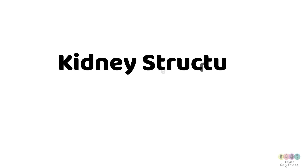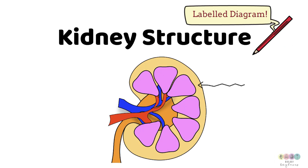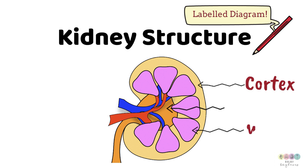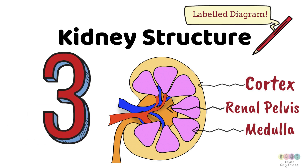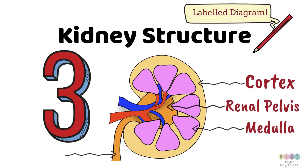Diagrams are very important in Leaving Cert biology, particularly in this chapter, so you must be able to draw and label a good diagram of the kidney. There are three labels to place on your diagram: the cortex, the medulla or medullary pyramids, and the renal pelvis — often forgotten. Three is the magic number and the renal pelvis is the one label students most often forget. Always add in the ureter as well.